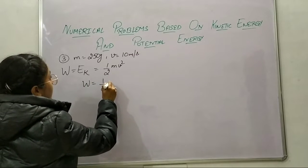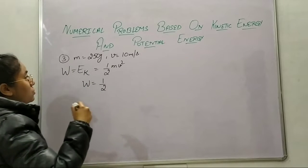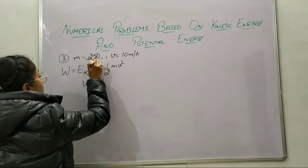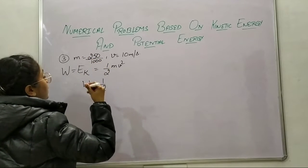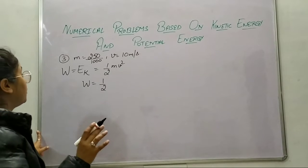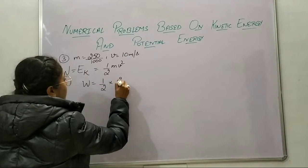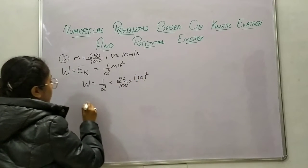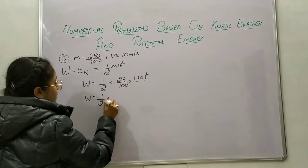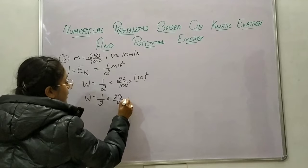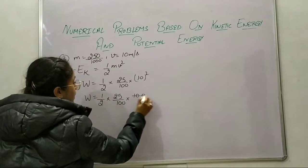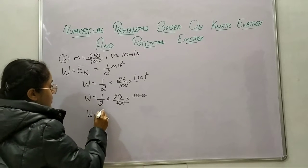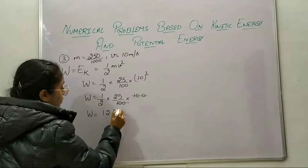Work done = (1/2) × mass × v². Mass is in grams so we divide by 1000 to convert to kilograms: 250/1000 = 25/100. So work done = (1/2) × (25/100) × 10² = (1/2) × (25/100) × 100. The 100s cancel and work done = 25/2 = 12.5 joule.